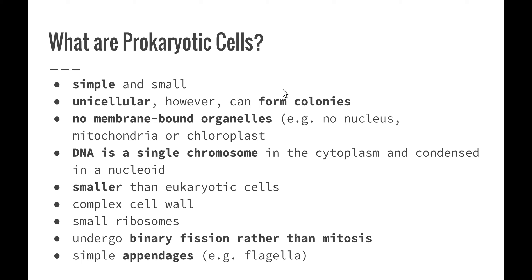So unlike us — we are eukaryotes and our DNA is found inside our nucleus — in prokaryotes the DNA is just condensed together in the cytoplasm in the form of a nucleoid. Prokaryotic cells are smaller than eukaryotic cells because they are much simpler and not as complex. They don't have the structured organelles within them like eukaryotic cells do.